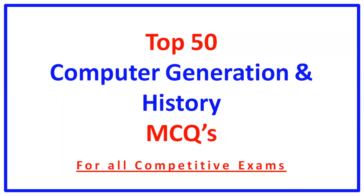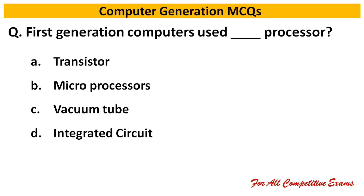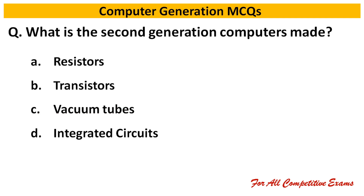Aaj ki studio mein hum dekhinge computer generations and history ke top 50 MCQs. Question no. 1: First generation computer used dash processor. Right answer is option C: Vacuum tube.